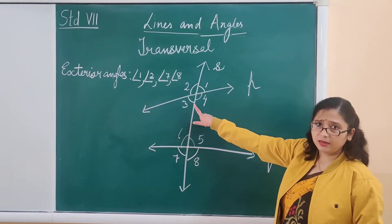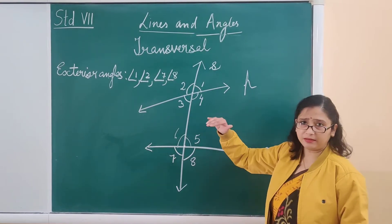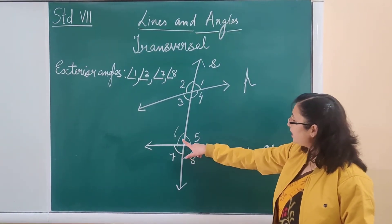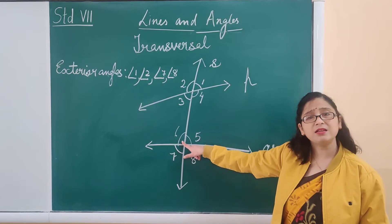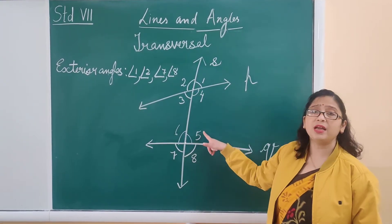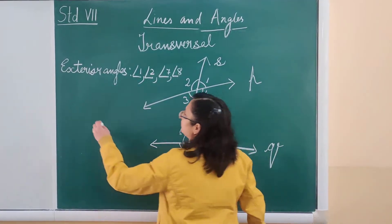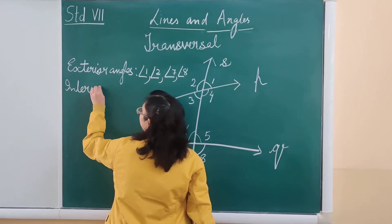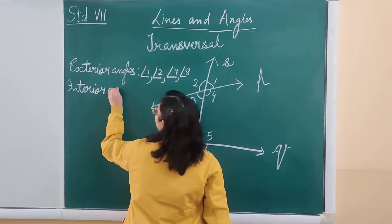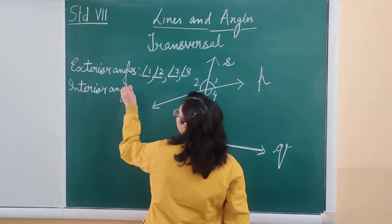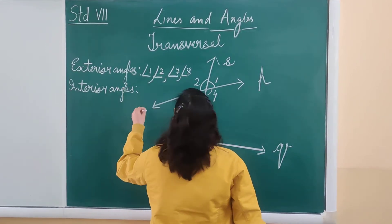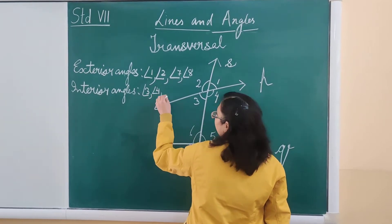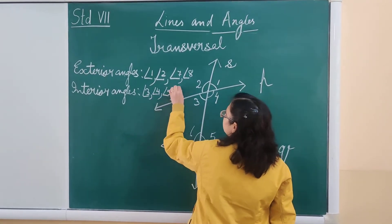Similarly, towards the interior are angle 3, angle 4, angle 5, and angle 6, so they are known as interior angles. The interior angles are angle 3, angle 4, angle 5, and angle 6.